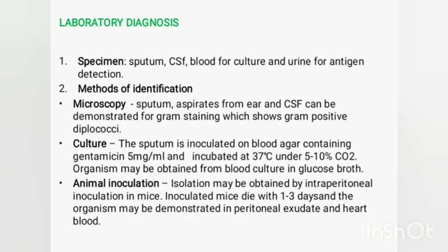Streptococcus pneumoniae can be demonstrated in the peritoneal exudate or heart blood of the mice. The peritoneum is the lining of the abdominal cavity; the specimen is inoculated intraperitoneally, and if positive, the organism is isolated from the intraperitoneal exudate or heart blood.